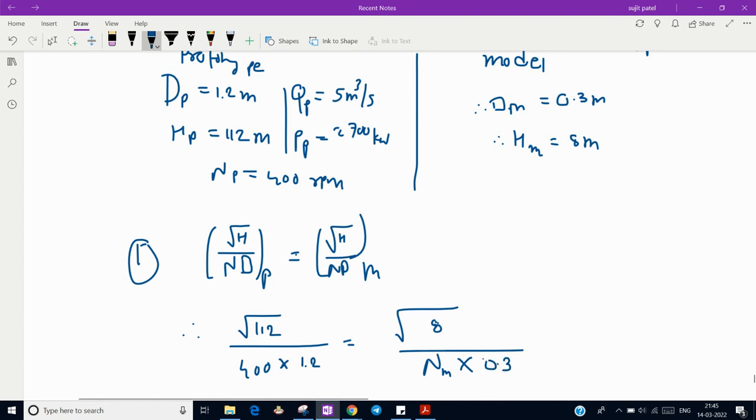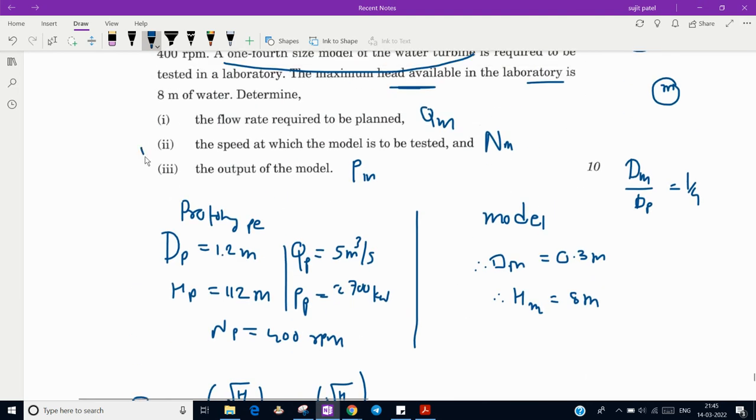Divided by N of model (rpm we have to find) and diameter of model is 0.3 meter. When you solve this simple calculation, you will get the speed of model, that means rpm at which model should be tested: it will come out to be 427.6 rpm. This should be the speed of the model, this is our answer.